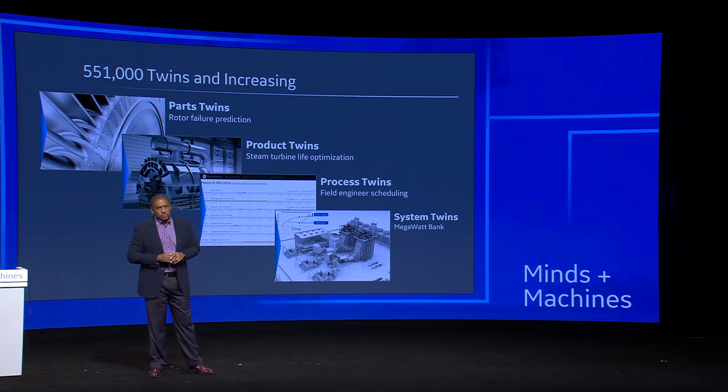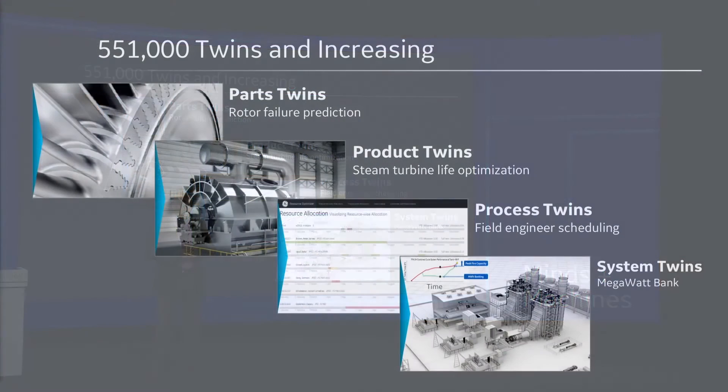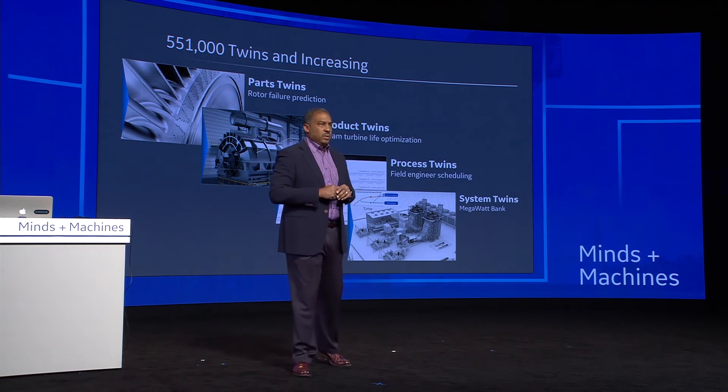What you saw there was an experience with one of 551,000 digital twins that we have currently running. This one can communicate with us with a richness of voice and vision that is usually unbelievable, but quite real. But all of them deliver value. We have parts twins — like the rotor failure prediction you just saw — which deliver early warning about a problem as well as telling you about the actual failure you'll encounter.